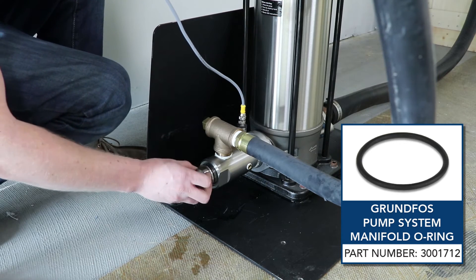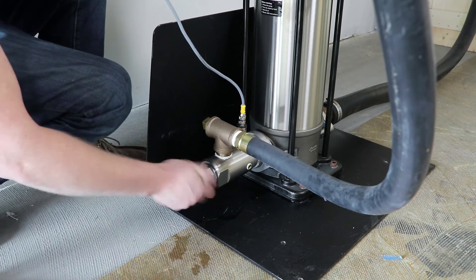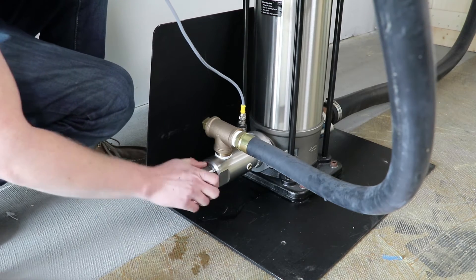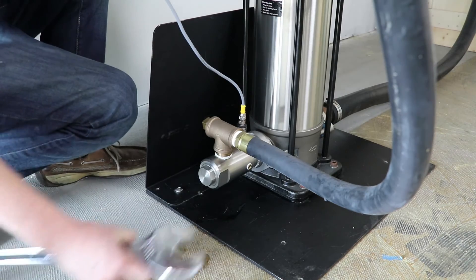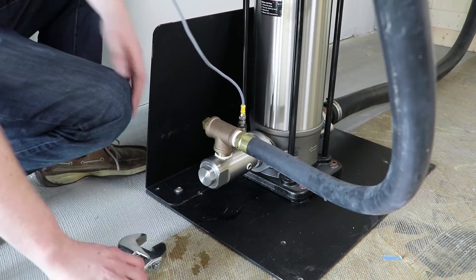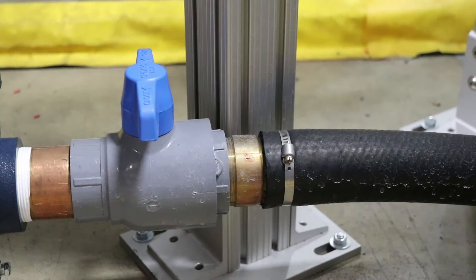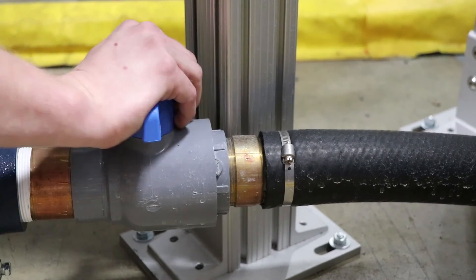Now we're just going to take our cap, thread it back in until it's hand tight. Then we're going to grab our wrench and just give it a tiny little snug and now we're ready to return water supply back to the pump by turning the ball valve back on.